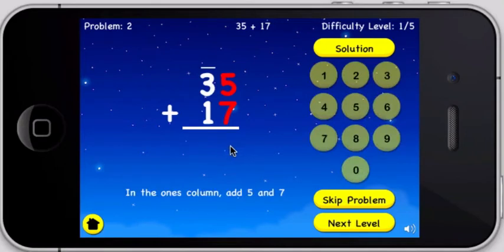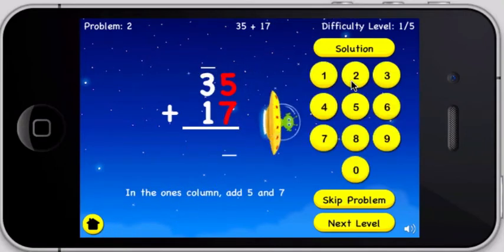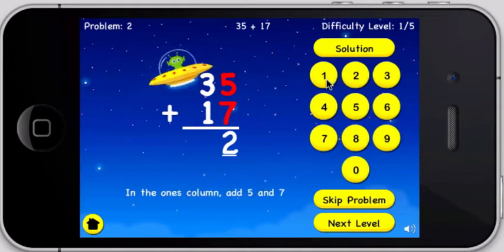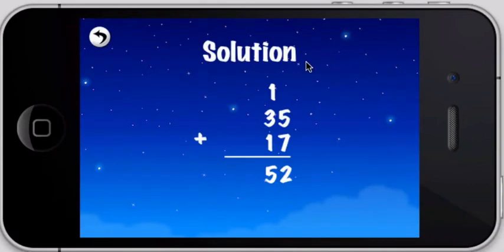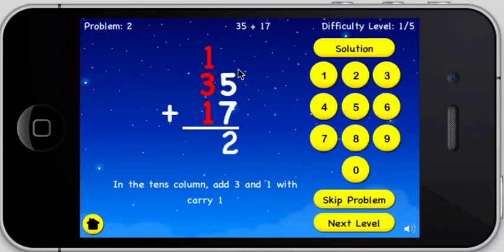In the 1s column add 5 and 7. In the 10s column add 3 and 1 with carry, 1.